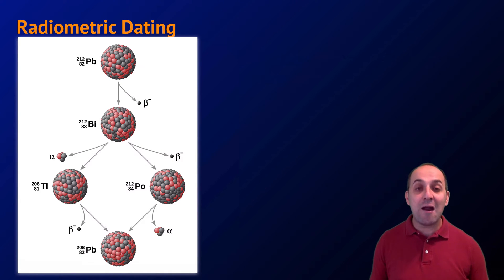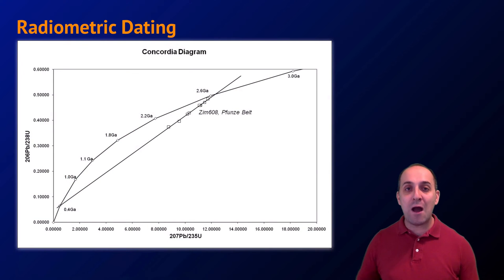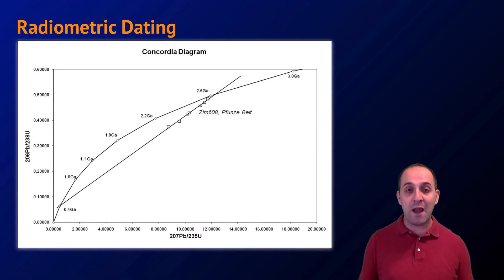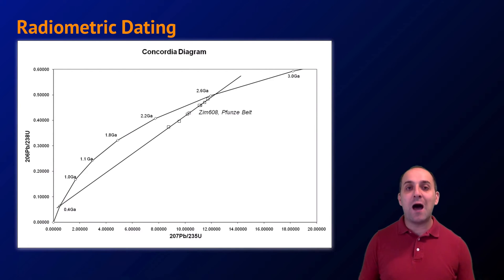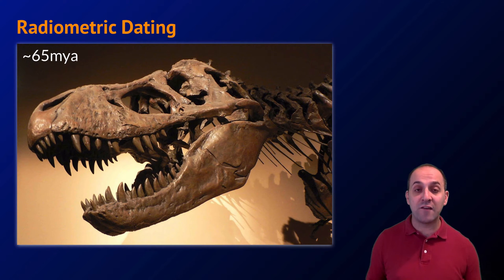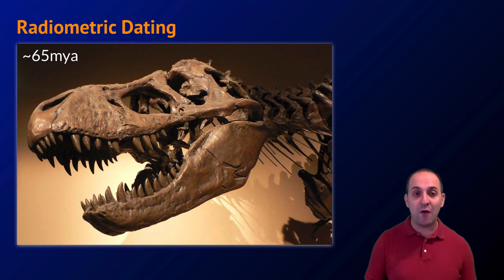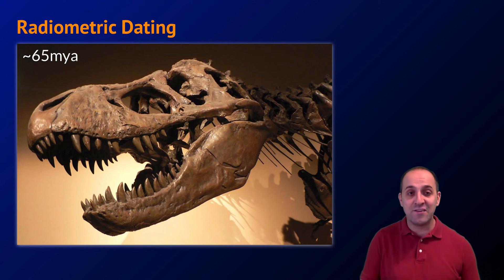Every radioactive isotope has a characteristic half-life associated with its decay. By measuring the amounts of radioactive isotopes still present in an object compared to the products from that decay, we can estimate the age of the objects we're investigating. This is how we know that the tyrannosaur fossil I started off with is approximately 65 million years old — determined by dating radioactive isotopes found in the fossils and in the rock layers surrounding the fossil at the time of discovery.